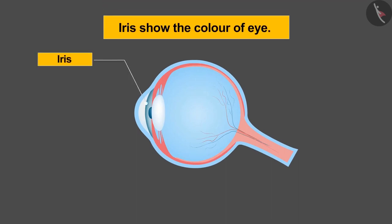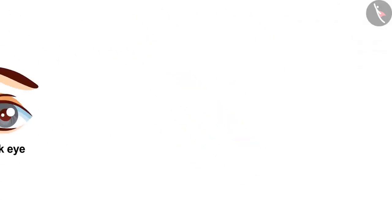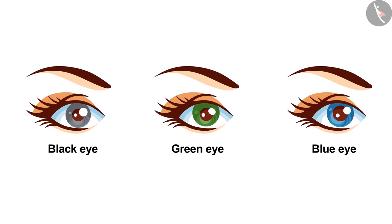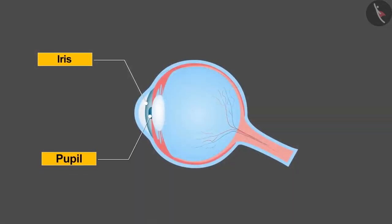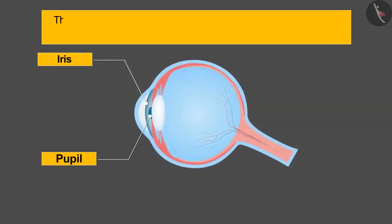After the cornea, the second part is known as iris. You must have seen that someone's eyes are black, or someone's green, or someone's blue. They are actually the color of the iris. In addition, the iris also controls the size of the pupil.